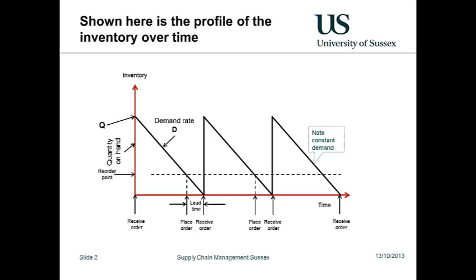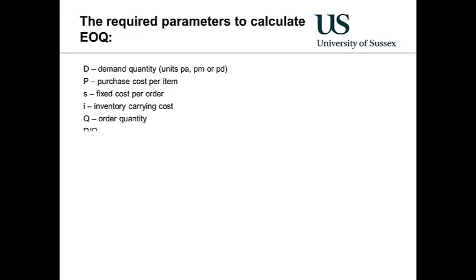We are now in a position to derive the economic order quantity model. In order to do this, we need to know the demand, the purchase cost per item, the fixed cost per order, the inventory carrying cost, and the overall order quantity which we are trying to derive.